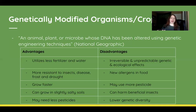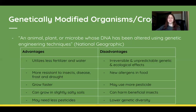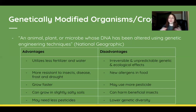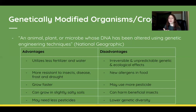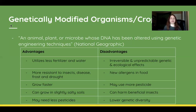Another significant disadvantage is that GMOs can cause lower genetic diversity, which we discussed in the last video is crucial. Forming something unnatural leads to more constrained genetic variation, which is not ideal. There are more pros and cons to research, but those are the key ones.